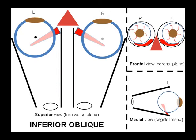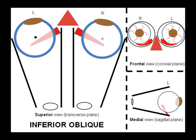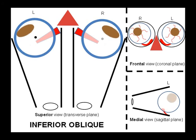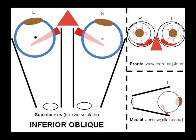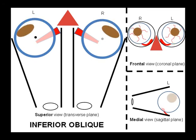Inferior oblique does a similar activity to superior oblique but causes elevation of the eyeball. Note how inferior oblique takes its origin from the medial orbital wall and not from the tendinous ring. The muscle fibres of inferior oblique insert on the inferior, outer, posterior part of the eyeball and pass posteriorly to the z-axis. Thus, on the superior view, inferior oblique causes abduction of the eyeball. On the medial view, inferior oblique elevates the eyeball by pulling on its inferior surface. Additionally, inferior oblique antagonises superior oblique by extorting the eyeball, seen in the frontal view.